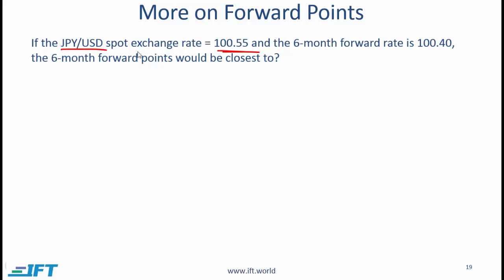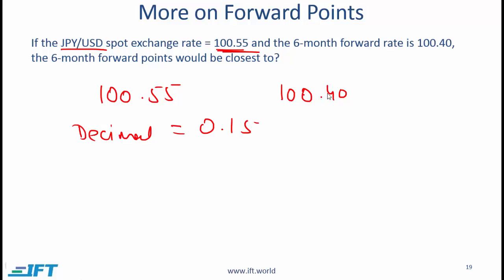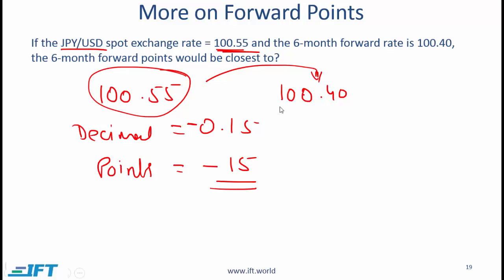Let's do this simple example. We have the spot exchange rate of 100.55 and the six-month forward rate of 100.40. The difference in decimal is minus 0.15 — the forward rate is lower. The number of forward points or pips is found by multiplying by 100, which gives minus 15. So if given the points, divide by 100 to get the decimal, then subtract from the spot rate to get the forward rate.